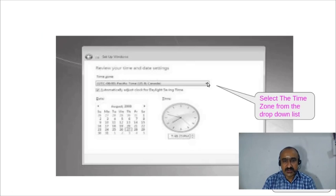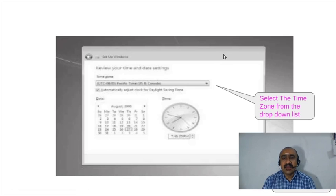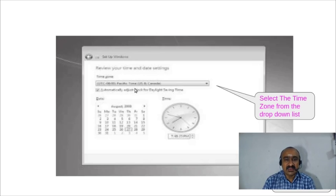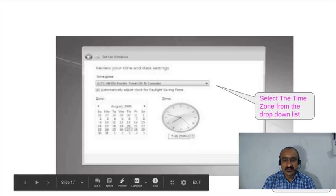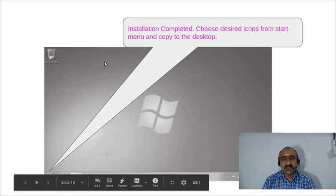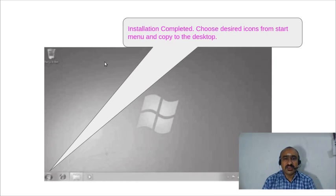The following screen has a drop-down list for selecting your time zone. Click the arrow to open the list and select your region — for example, Calcutta/Delhi/Chennai/Mumbai for India's time zone. Select the appropriate option and click 'Next.' The system will take a moment to finalize.